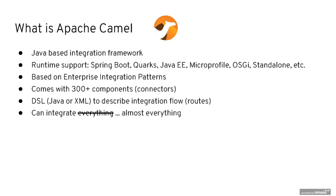CAMEL is a Java-based integration framework. It supports and runs on many popular runtimes like Spring Boot, Quarkus, Java Enterprise, MicroProfile specification, OSGi, Standalone, and more. It's based on the idea of Enterprise Integration Patterns and comes with a lot of components — connectors to connect to many different systems. In CAMEL, you define how you integrate different systems using a DSL, which you can code in Java or XML. If you've never seen CAMEL routes before, you're going to see them in the next slide.